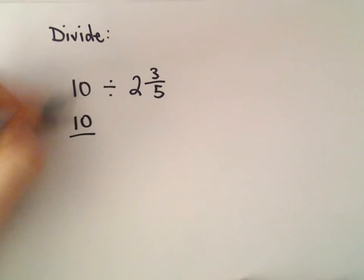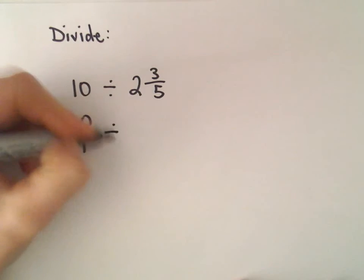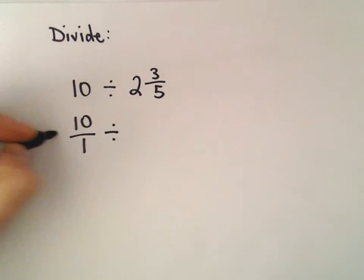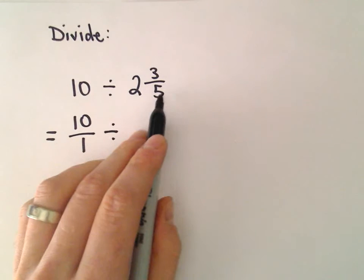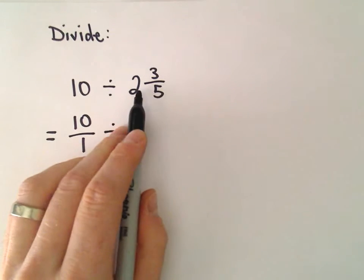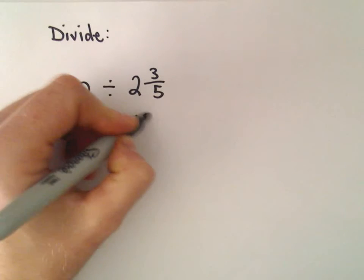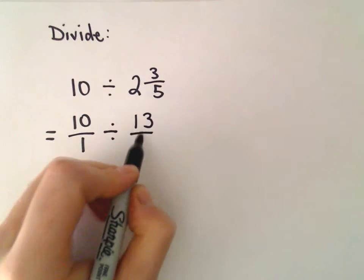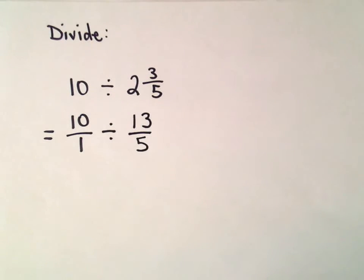So I'm going to write 10 as 10 over 1. We'll leave the division alone for just a moment and make the mixed number into a fraction. 5 times 2 is 10, plus 3 is 13. We still have the 5 in the denominator, so it becomes 13 over 5.